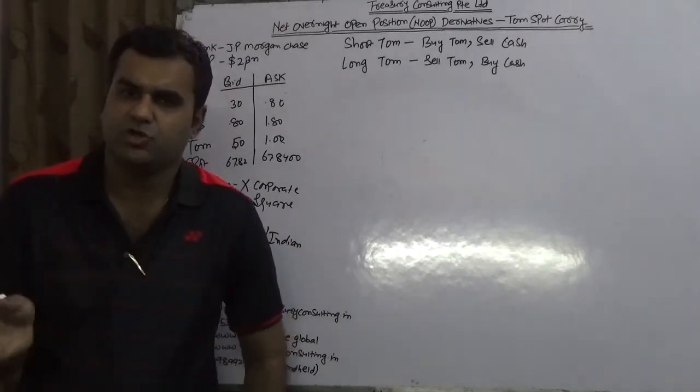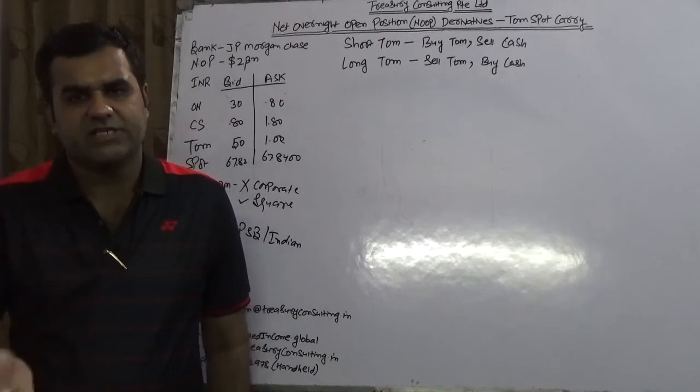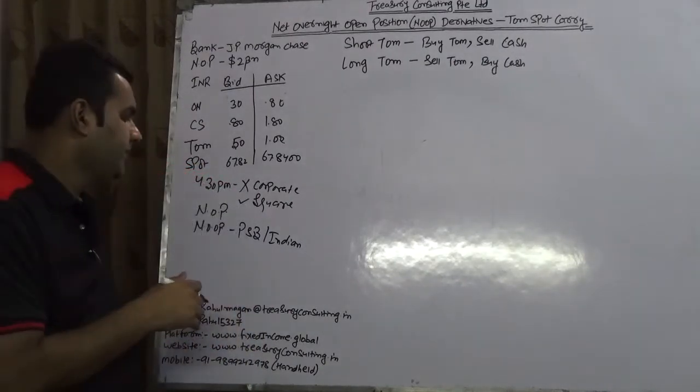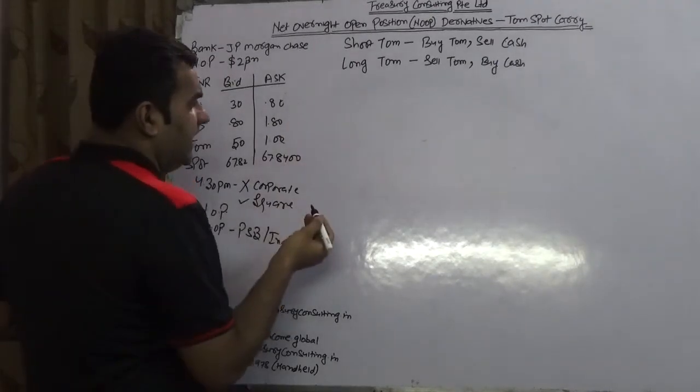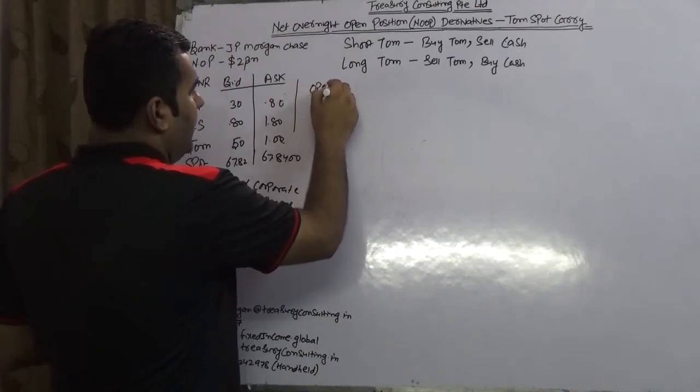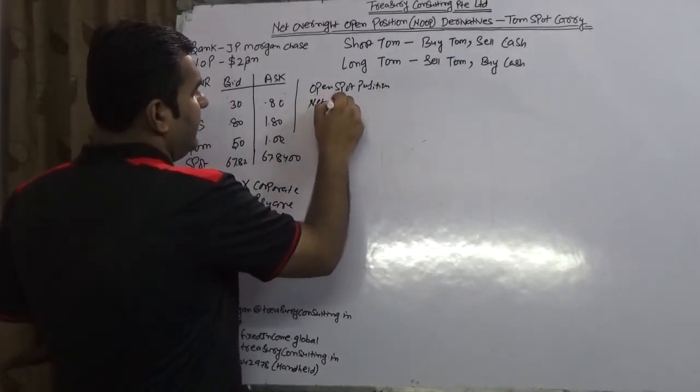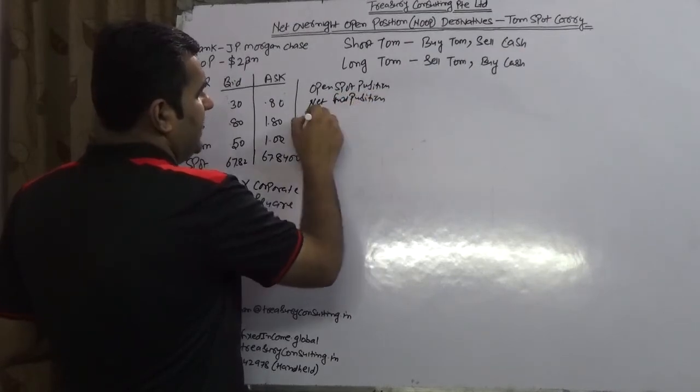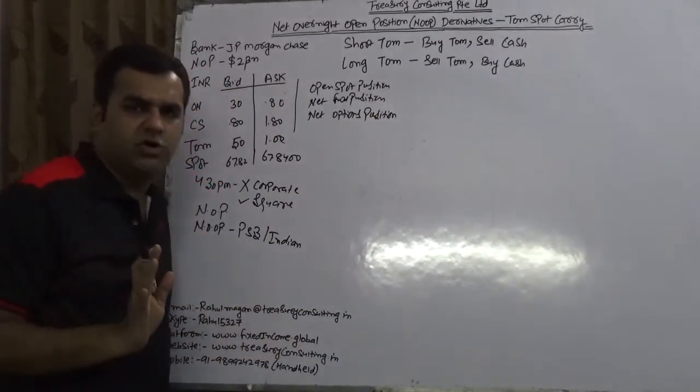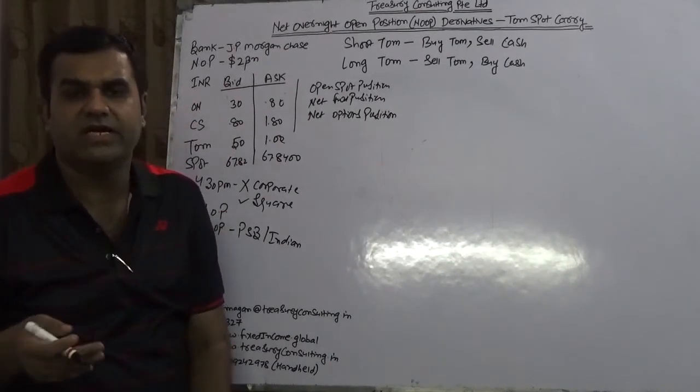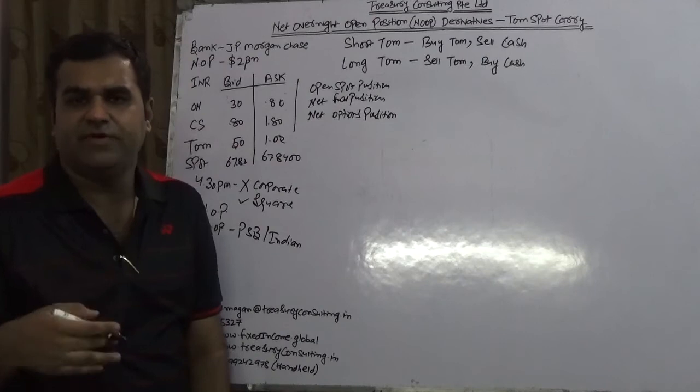All Indian banks like SBI and ICICI I am sure they are doing NOOP. On the contrary, all the foreign banks, JP Morgan, Standard Chartered, they do NOOP reporting. Now NOOP reporting is actually sum of all three: the net spot position, the net forward position and the net options position. Please do not come to me and say what is the definition of that. If you wanted to have the definition, then you should visit RBI Interbank and Risk Management Circular which is very well available on Google.